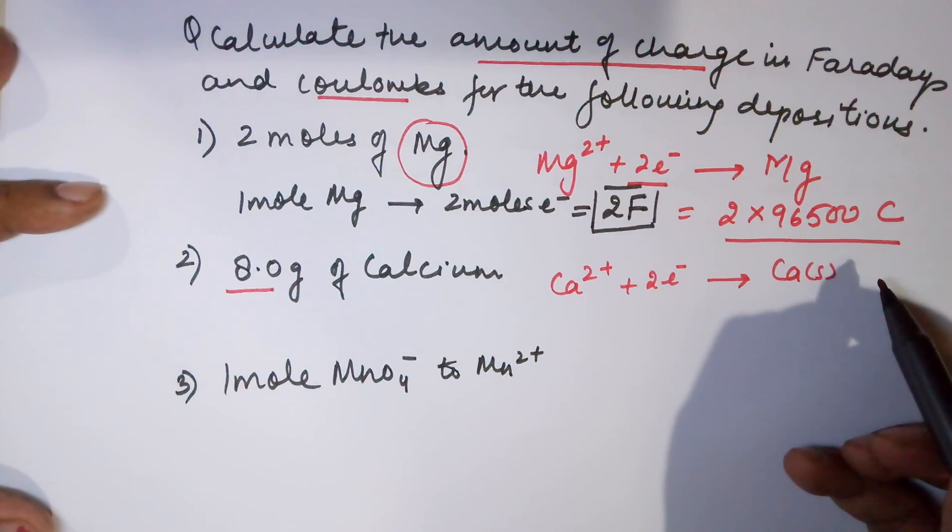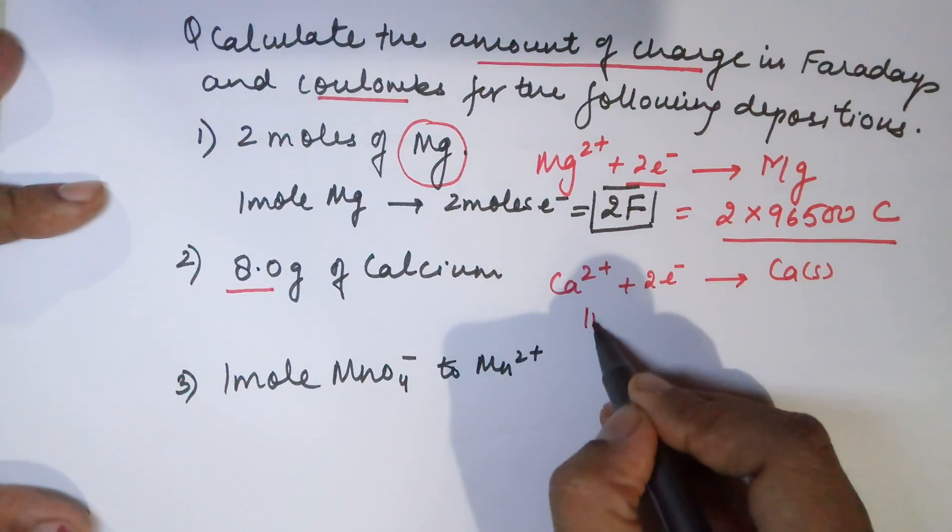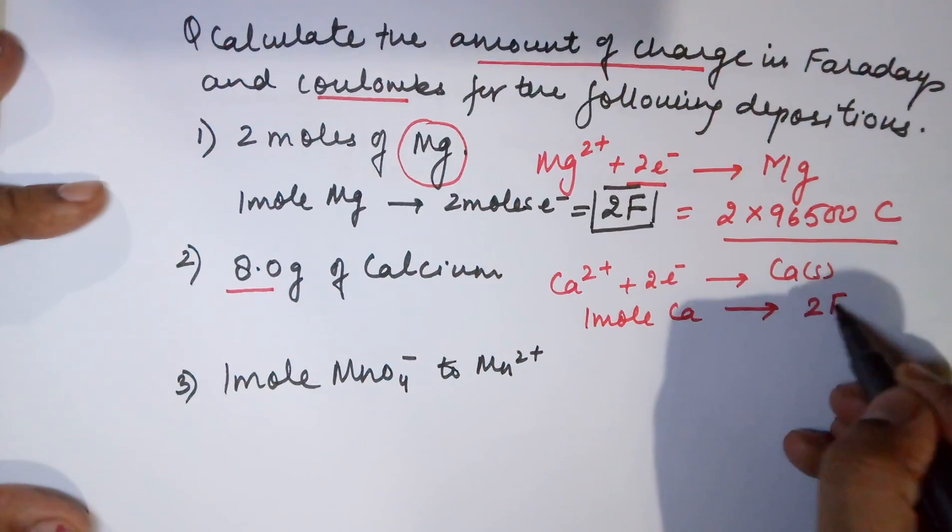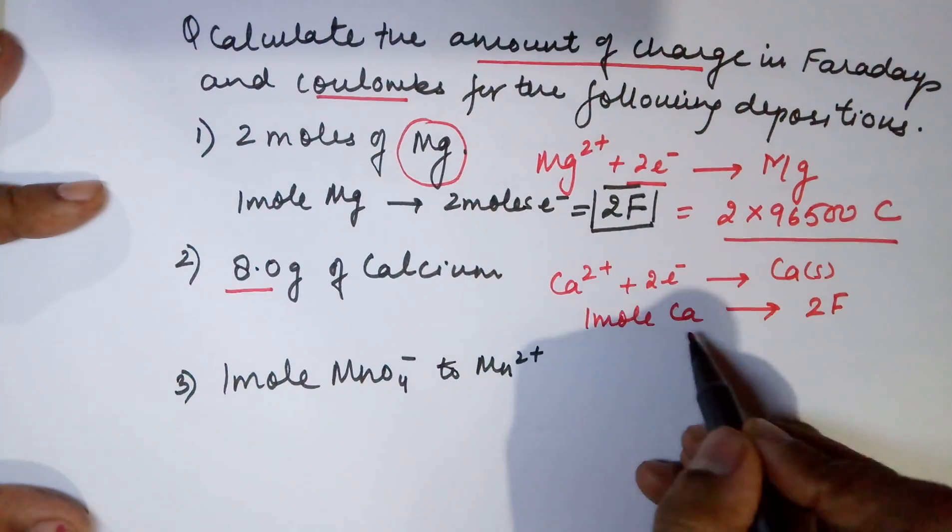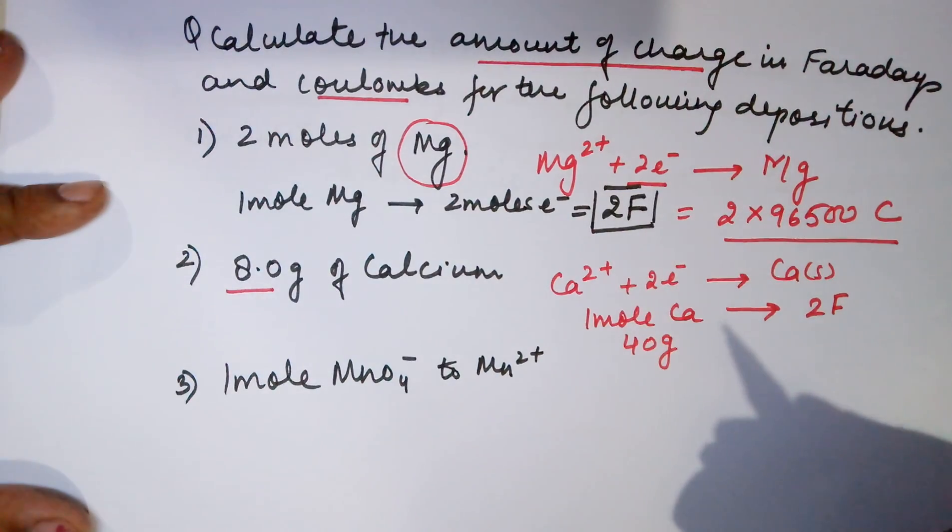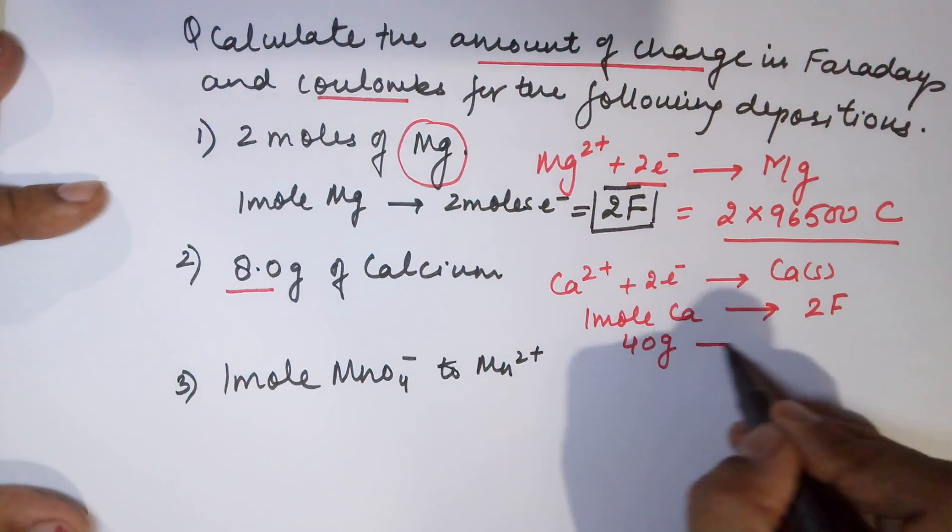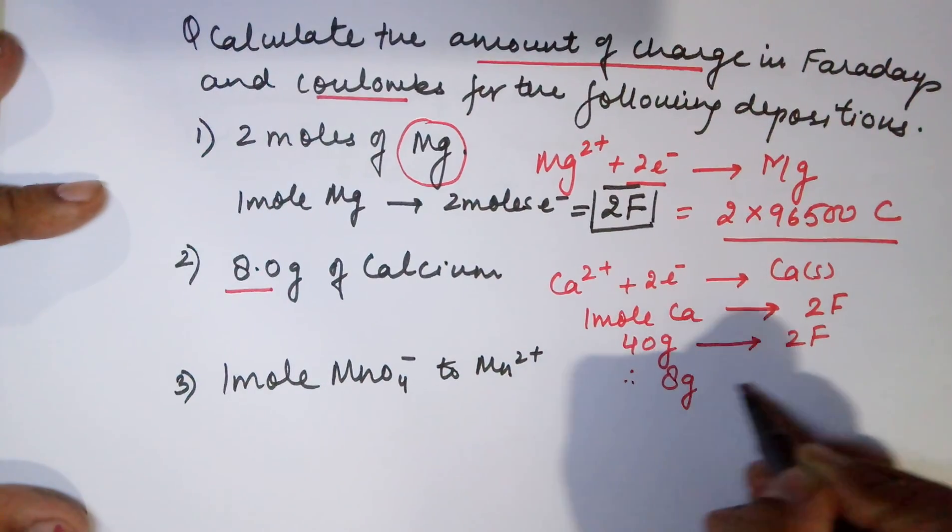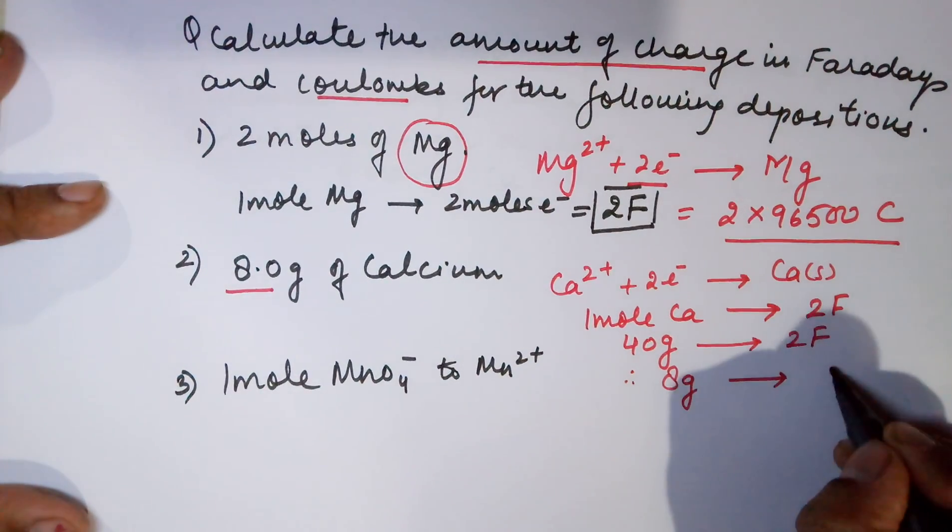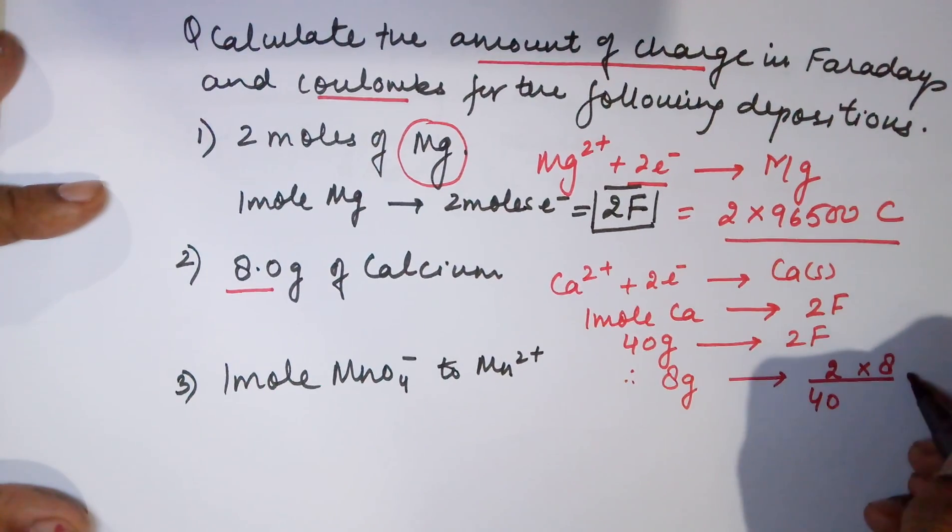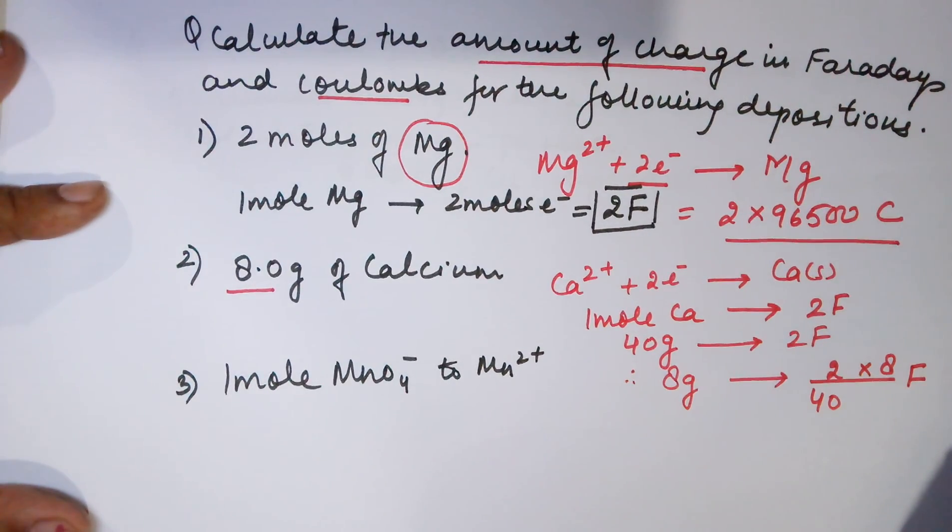From the given equation, we know that for 1 mole calcium, you need 2 Faraday's of charge. 1 mole of calcium equals 40 grams. 40 grams of calcium needs 2 Faraday's. Therefore, 8 grams will require how much? The value becomes 2 ÷ 40 × 8.